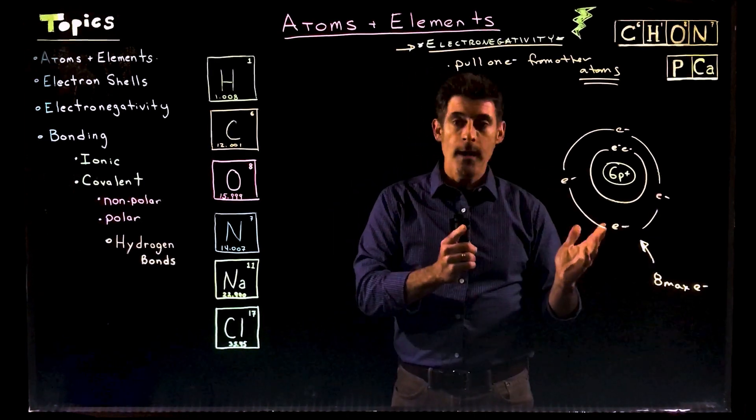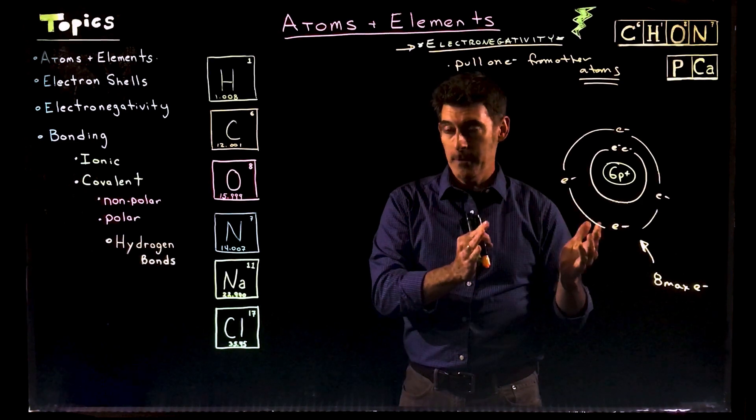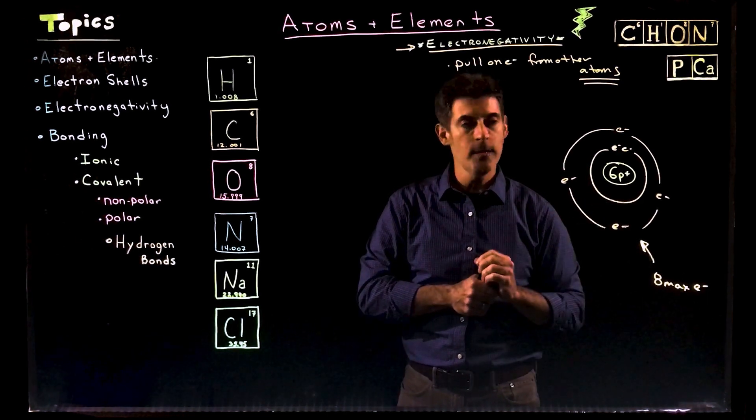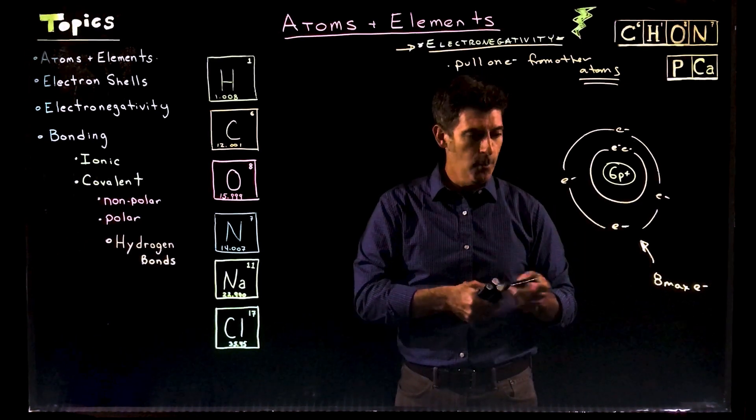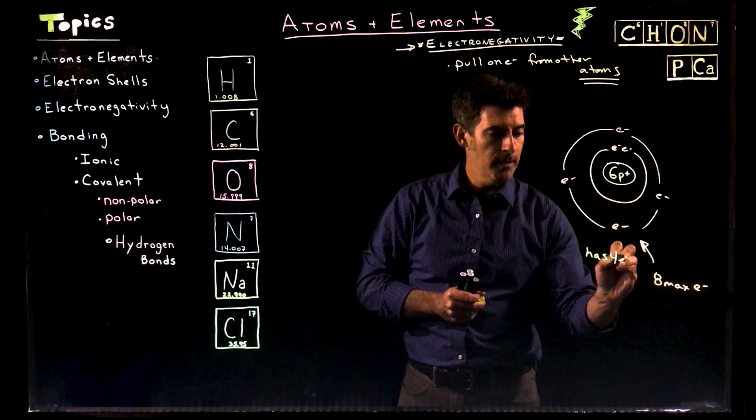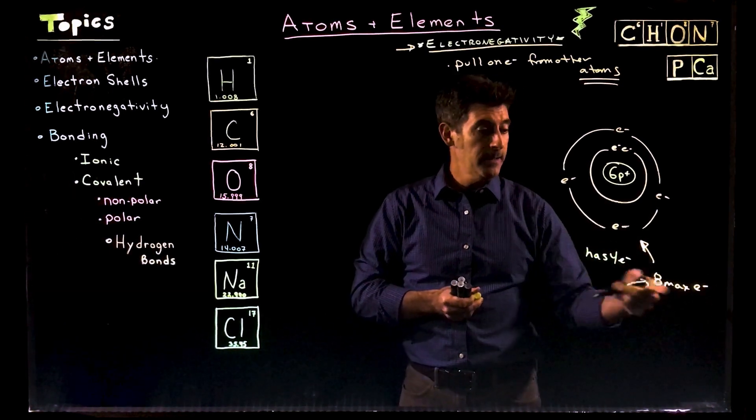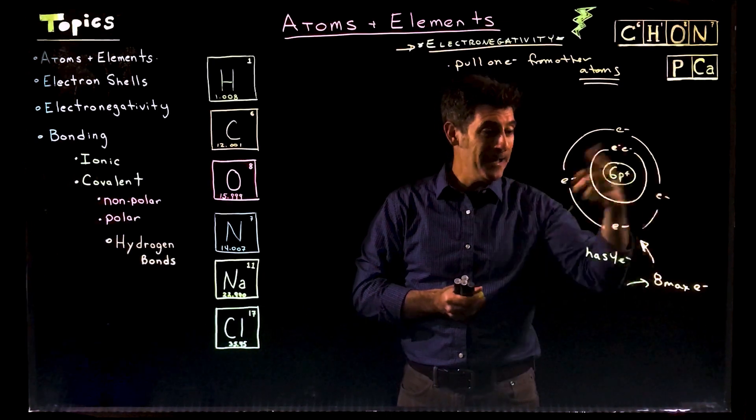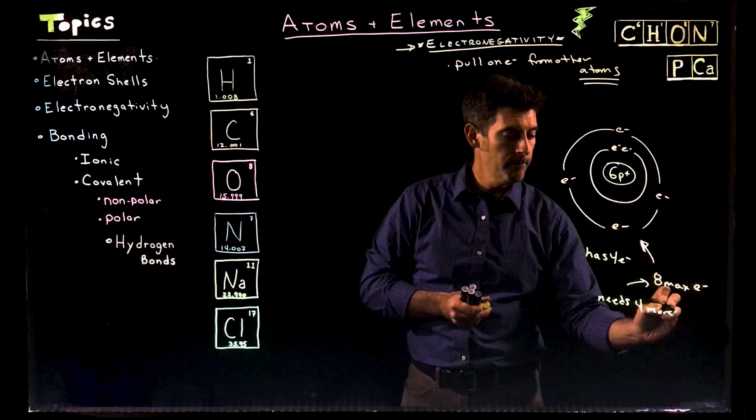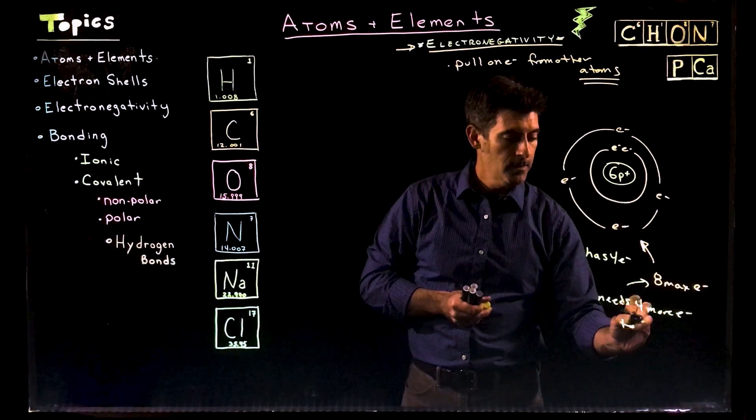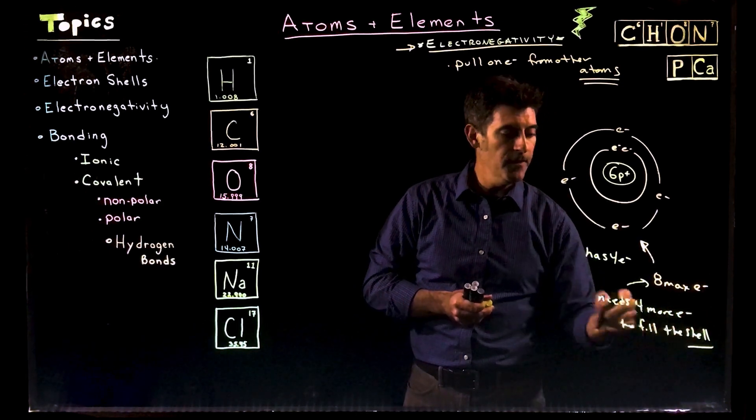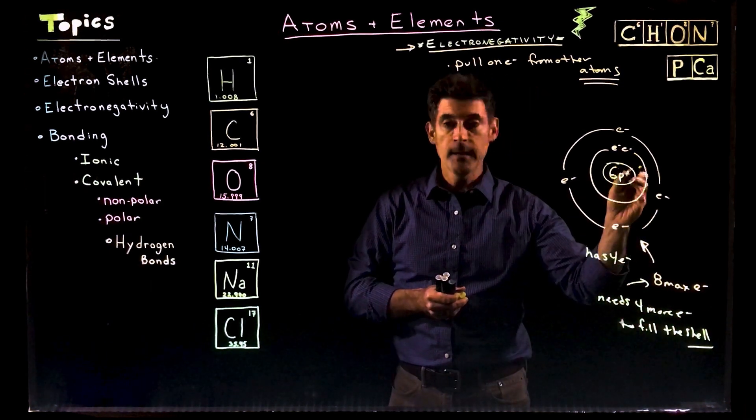So that's the why. Why do elements interact with other elements? It's to fill up this shell. And they are most stable when that shell is full. So if this carbon has four electrons, it can have eight maximum there. So essentially it needs four more electrons to fill the shell. So if it's going to fill that outer shell with electrons, it needs four more.